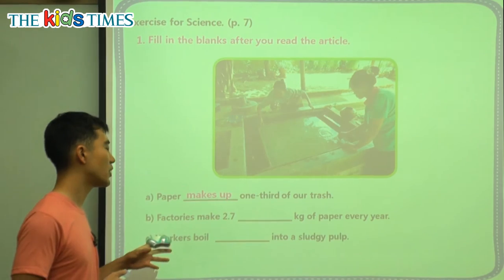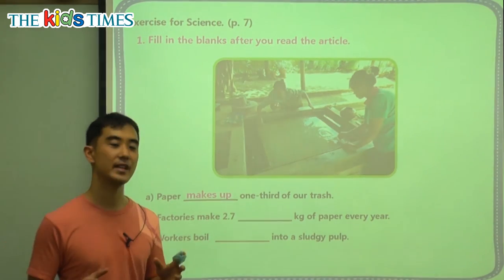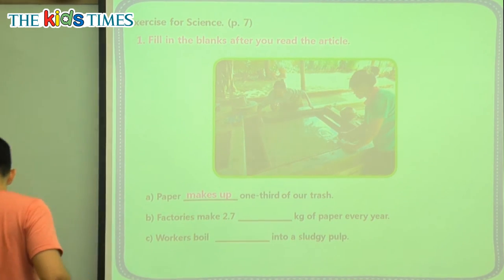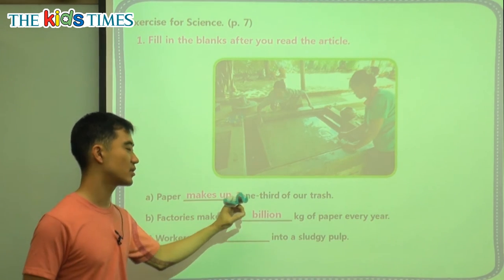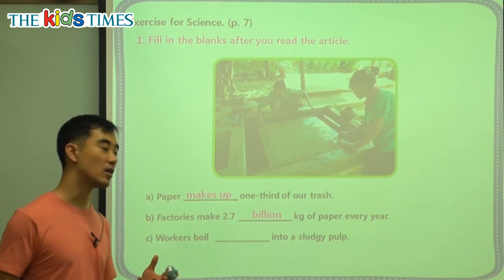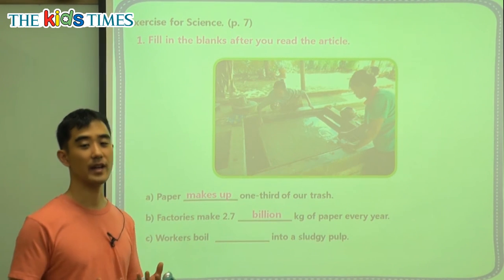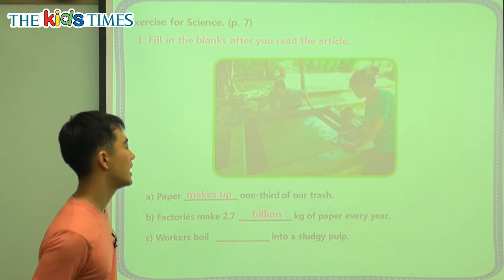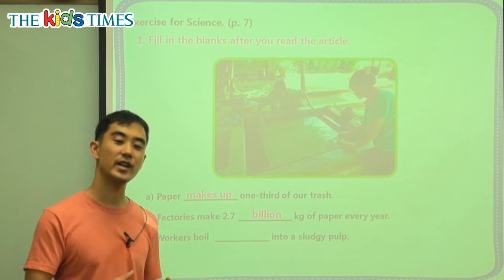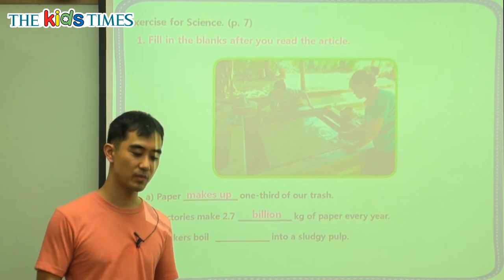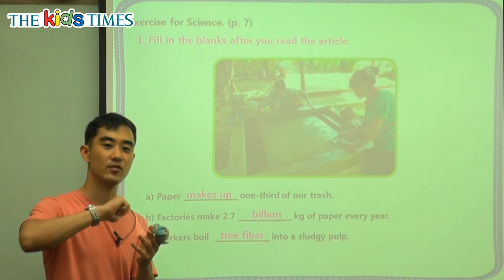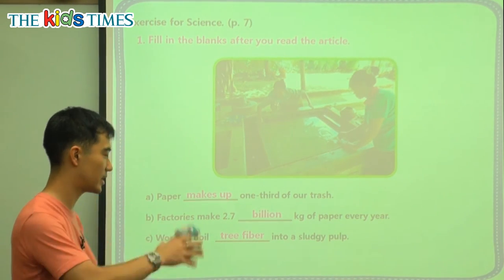Millions has six zeros, but billions — change it to a B — has nine zeros. So it's 2.7 billion. C: Workers boil blank into a sludgy pulp. Boil means to put it in hot water over 100 degrees Celsius. We don't put the leaves or the roots — we put the fiber, the main part of the tree. We peel it like an orange or an apple, then put it into the water.